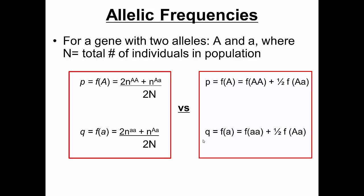Now, how do we calculate allelic frequencies from a population? Previously we talked about actual genotypes; now we're talking about actual frequencies. Eventually we'll use p and q to predict predicted frequencies, but right now we're dealing with actual observed values. Again, one gene, two alleles — big A and little a — and N is the total number of individuals. This is where p and q enter the picture when dealing with Hardy-Weinberg.